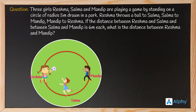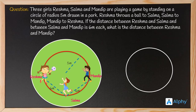The radius of the circle on which they are playing is 5 meters. The distance between Reshma and Salma, and between Salma and Mandeep, is 6 meters each. We need to find the distance between Reshma and Mandeep. Let me draw a diagram: here is the circle with center O, where R is Reshma, S is Salma, and M is Mandeep.